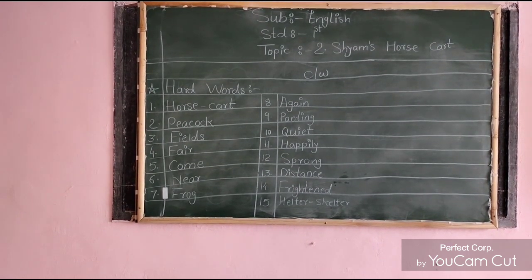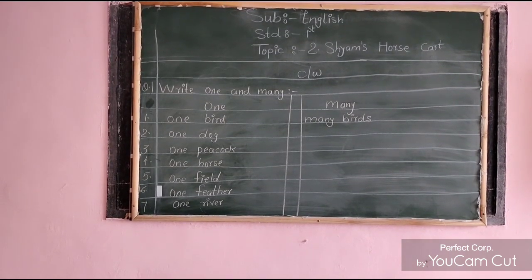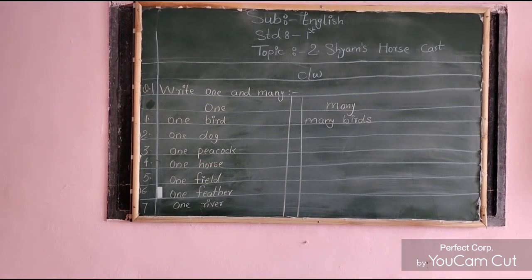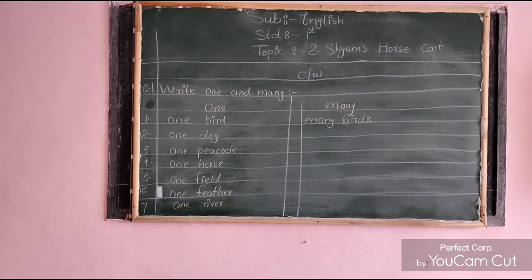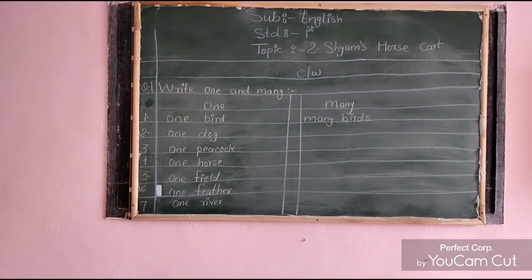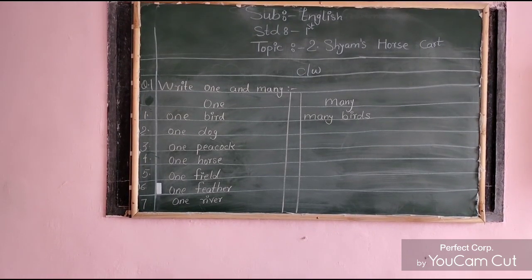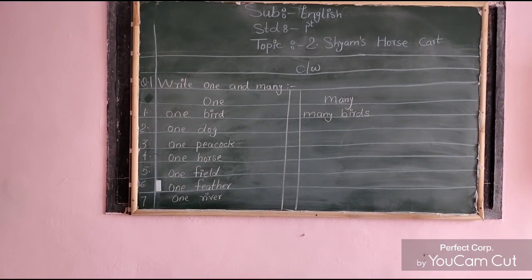Okay, so with the help of blackboard I gave you 15 hard words. Now, question number one: Look at the board carefully. Whatever I wrote, look at the first question — write one and many. I made two columns. In the left side 'one' is written and on the other side 'many' is written. You have to write 'many' before the given word.